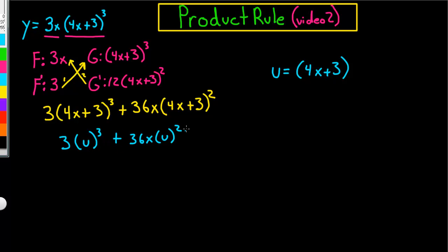So, they both have, they're both divisible by u squared, right? And this one, they're both divisible by 3. So, we're going to take 3u squared times u plus 12x.